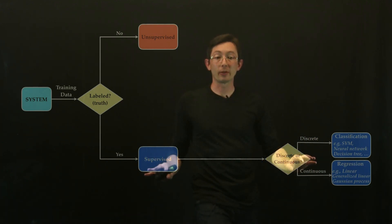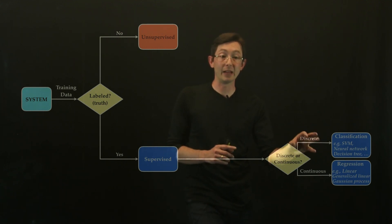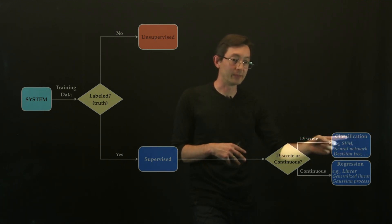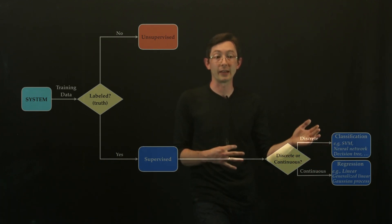And if you have a supervised learning algorithm based on discrete labels, then this is called classification. And there's lots of algorithms, including support vector machines, neural networks, decision trees, random forests, things like that.